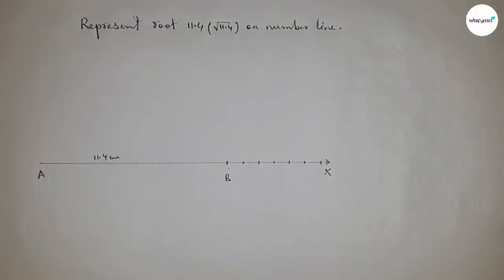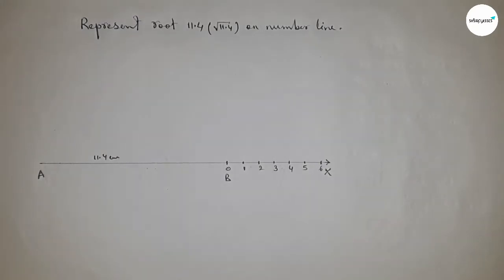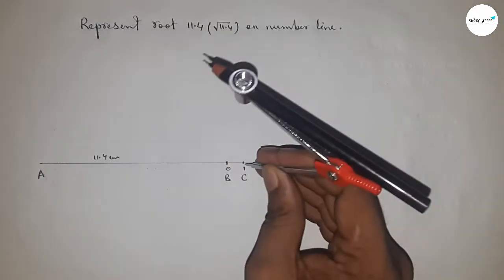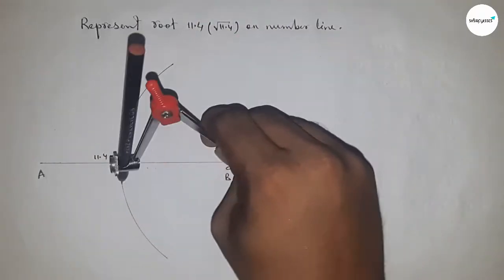Mark by this way: 0, 1, 2, 3, 4, 5, 6, and so on. Take point C here. Now bisect the line AC. Take greater than half of AC and draw an arc here and an arc here with same length. Put the compass here and cut here.